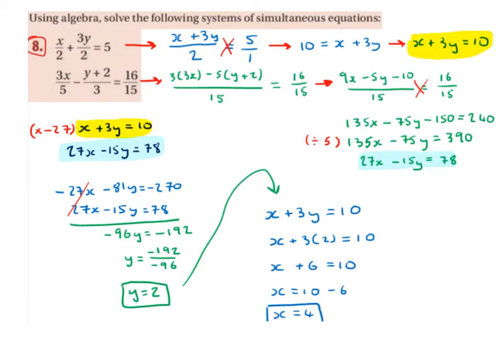Now my x's have the same coefficient in front. One's a minus, one's a positive, so they cancel. Minus 81y minus 15y is minus 96y. Minus 270 plus 78 is minus 192. Minus 192 divided by minus 96 is 2. So y is 2.